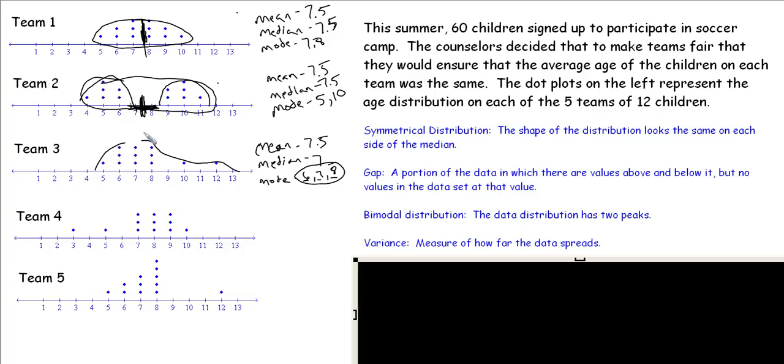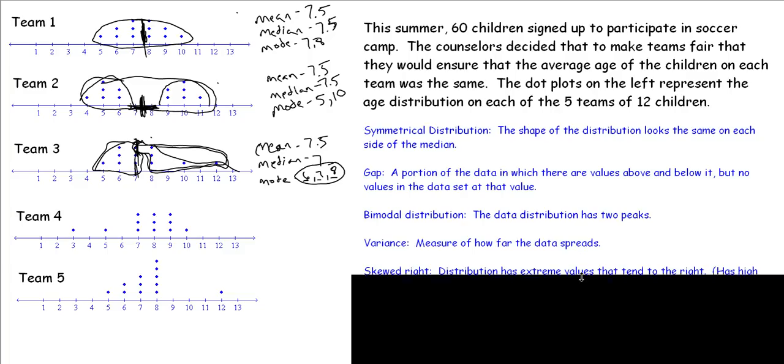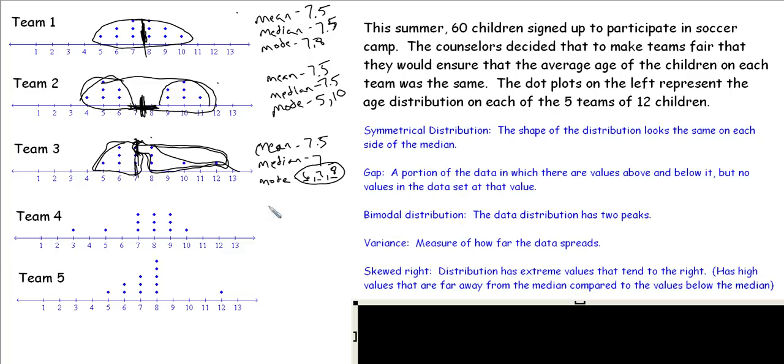The reason it's not symmetrical is this right side stretches out further than the left side from the median. Notice that this side spreads out further than this side. This is a distribution we call skewed right or skewed upward. That means the high values are further away from the median than the low values are away from the median on the opposite side.